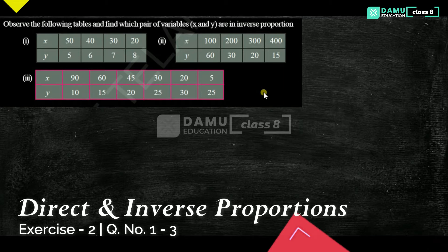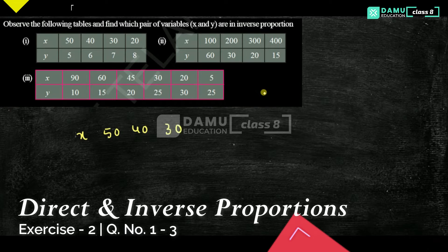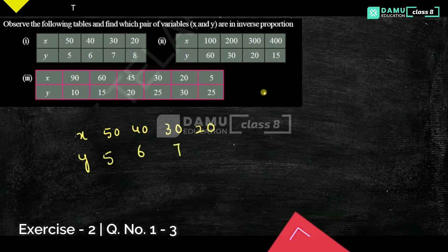So in this module, we are going to discuss: observe the following tables and find which pair of variables x and y are in inverse proportion. Here x is decreasing — x is 50, 40, 30, 20 — and y values are 5, 6, 7, 8.